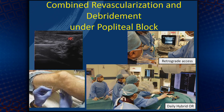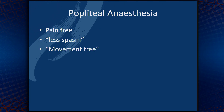In my institution, we do a combined revascularization with debridement under a popliteal block. With 10 mils of lidocaine around the nerve, we are able to render the patient completely anesthetic and completely immobile, and perform tibial angioplasty and soft tissue debridement all at the same time. Popliteal anesthesia is well-suited for this — patients are pain-free, and in my opinion there's less spasm. They're also movement-free because the block gives both anesthesia and paralyzes the leg.